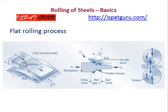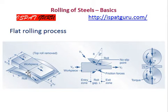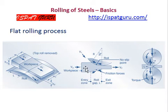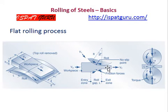In this figure, one can see the workpiece. The top roll is removed, and this is the bottom roll. The workpiece is in contact with the rolls. There is a neutral point, which is also called the no-slip point. Before this no-slip point, there is an entry zone where the speed of the workpiece is normally less than the rolls. After the neutral point, the speed of the workpiece is higher than the rolls.